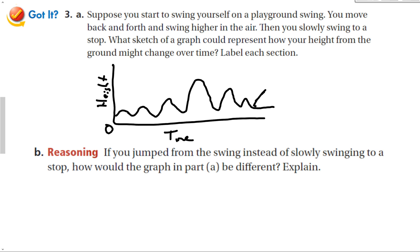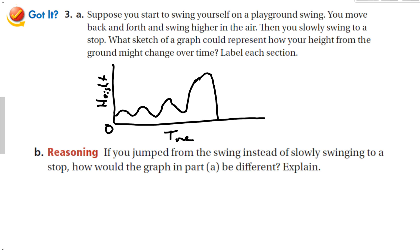If you jump from the swing instead of slowly swinging to a stop, how would the graph be different? As you get to the top of your swing, you take a little jump — your height would go a little bit higher than the arc of the swing, and then drop right back down. Depending on the situation, we can model our graphs to tell a story and make a picture.